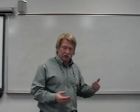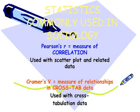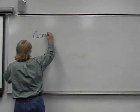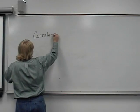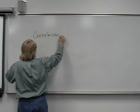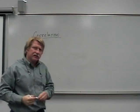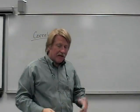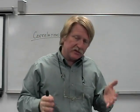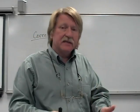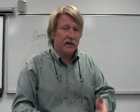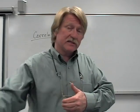The first two — correlation and Cramer's V — are both measures of association and they're used with specific types of data. One of the big things in sociology is that we work with correlational data so much we have to remember that just because two things are correlated does not mean that one caused the other.